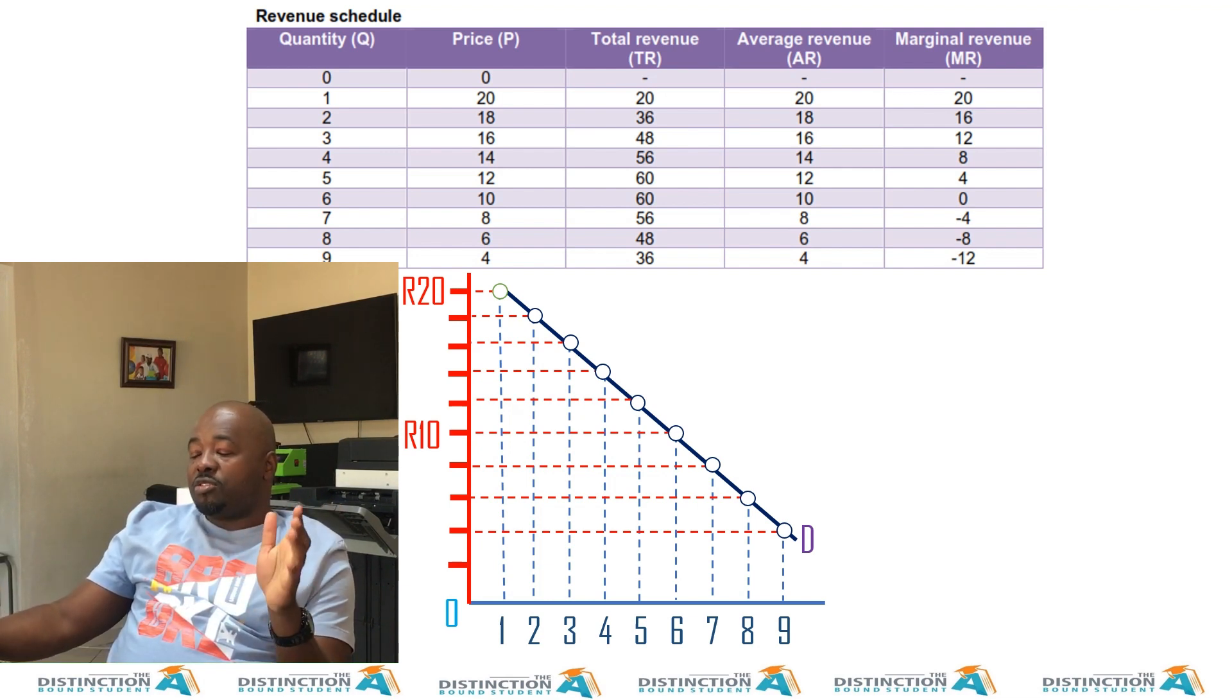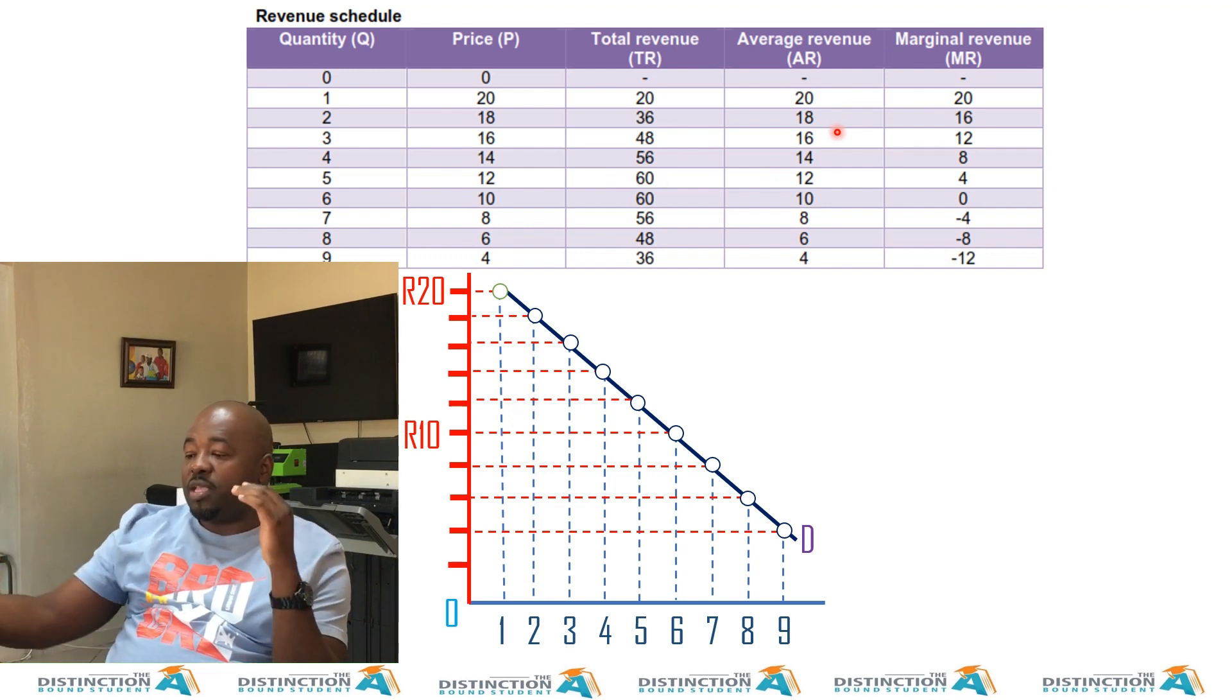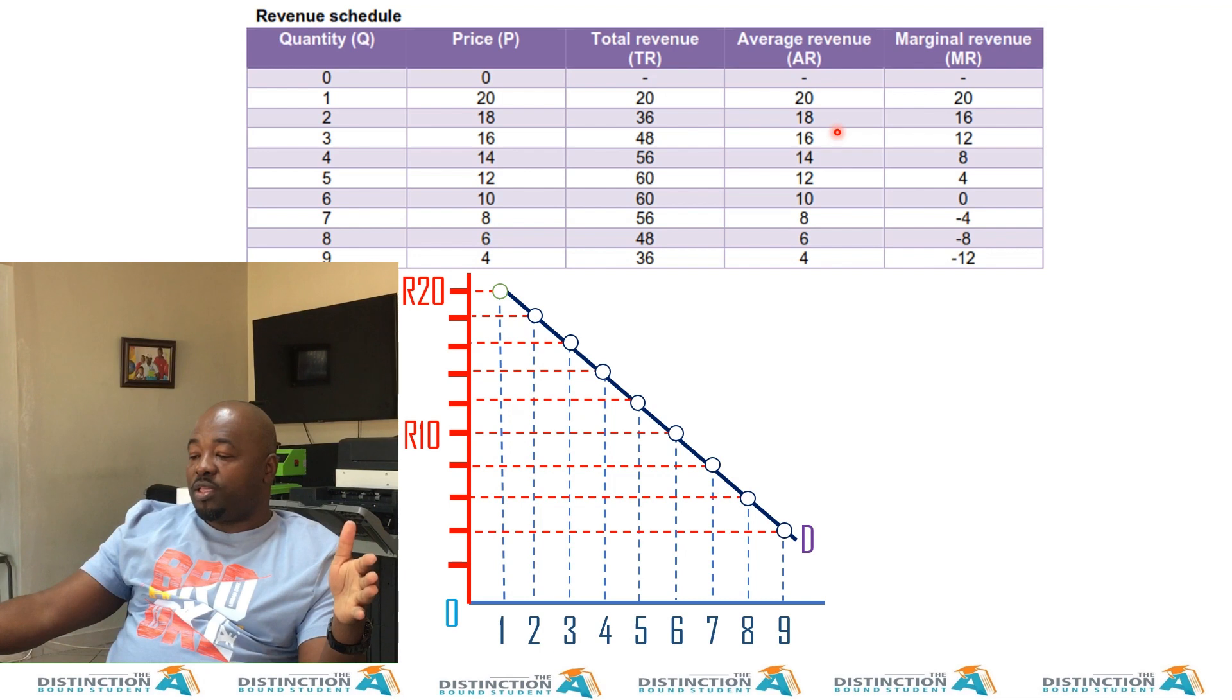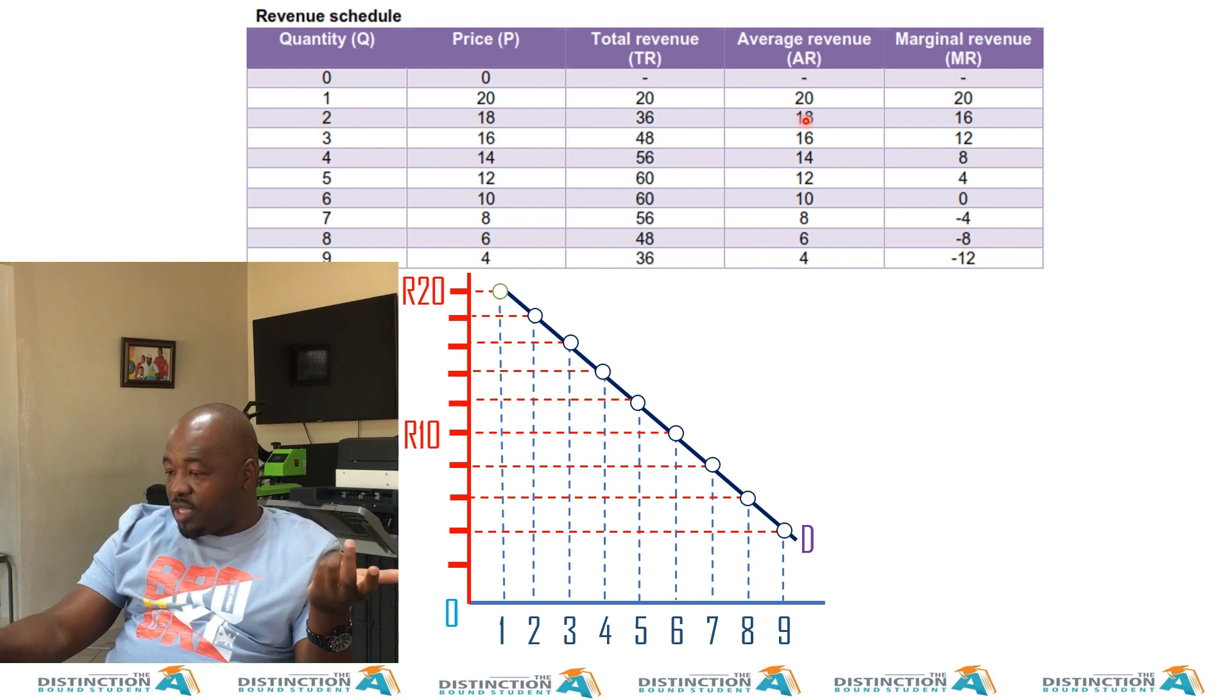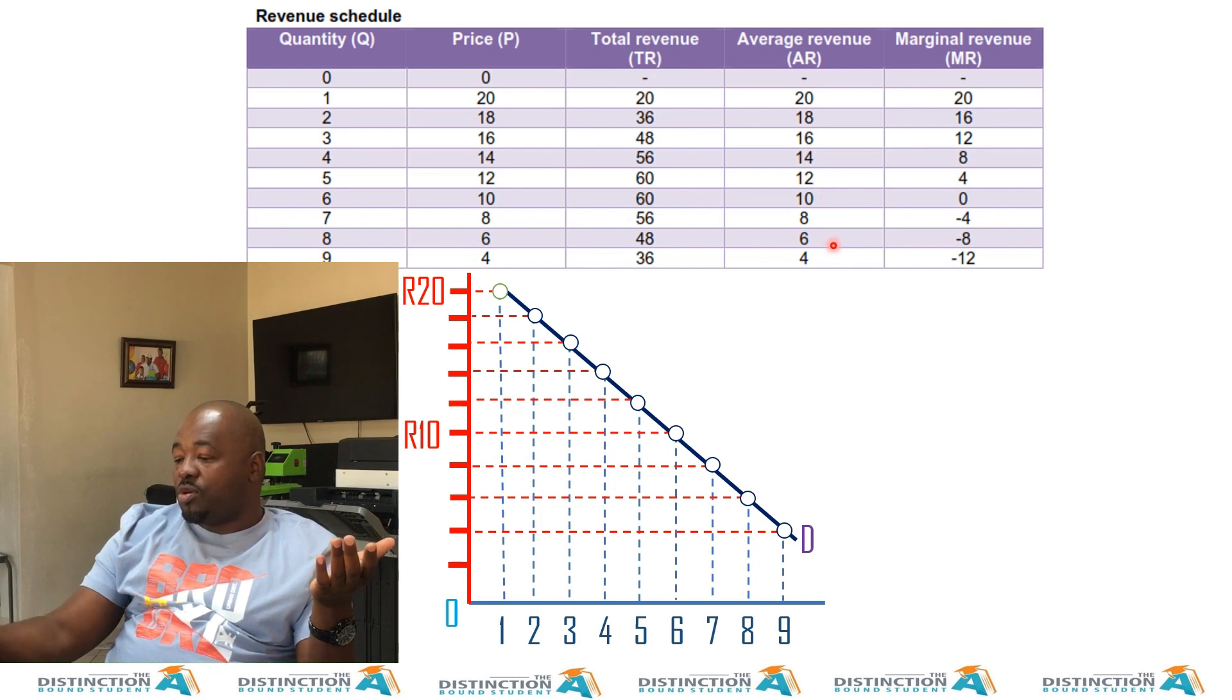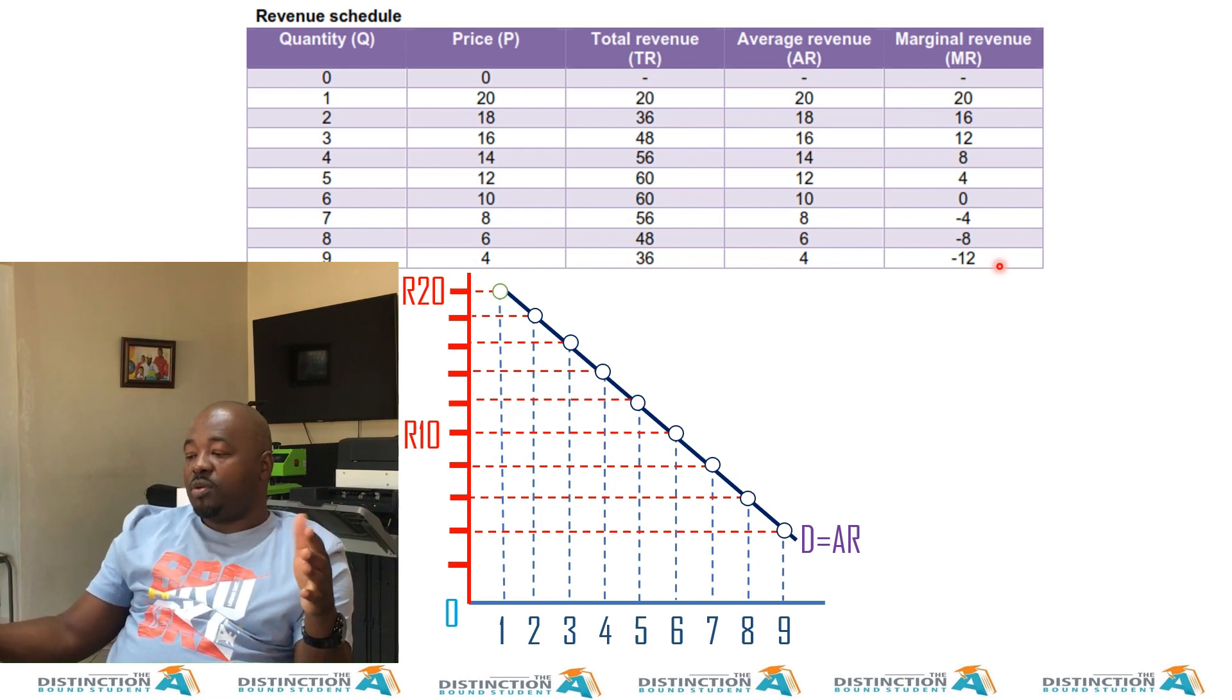Now, is there anything that looks exactly the same as our demand curve? And the answer is yes. And that is our average revenue curve. And it's also because if we calculate, you can do it manually if you want. But if you say TR divided by Q, it will be 20 divided by 1, 20, it will be 36 divided by 2, it gives you 18. So take this number and divide by whichever number it corresponds with on the quantity axis, you get average revenue. So we have AR going down as well. So D is equal to AR, we can conclude with confidence.